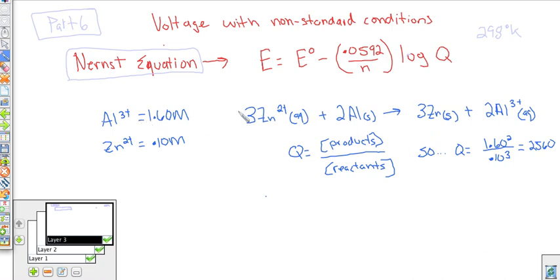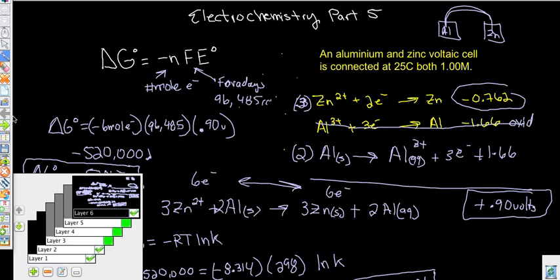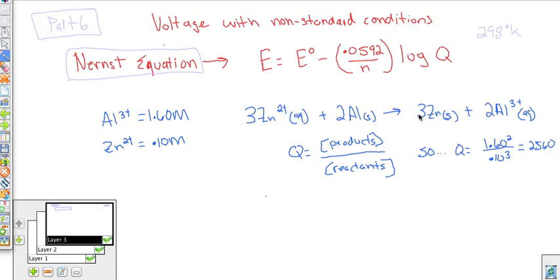So what if we take the equation that we talked about previously in part five, we use this equation where we said we have aluminum and zinc, and we showed how this is going to go totally to completion, it's totally spontaneous, we proved all that stuff. Now what if we take that same equation, and we use it only this time, instead of at standard concentrations, we have differing concentrations. And so let's say that our aluminum, we have 1.6 molar, so 1.6 molar of the aluminum, and we have 0.1 molar of the zinc.